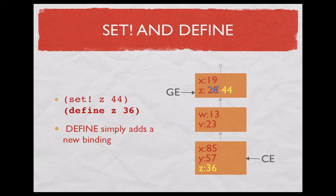Now we define z as 36. What happens now? Well, the current environment is pointing to the bottom frame. So define creates new bindings in the frame which is current. And there you go. Now we get a binding, a new binding for z, z 36 in that frame.